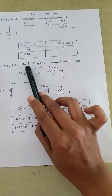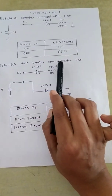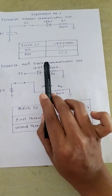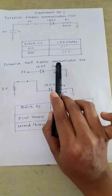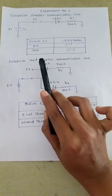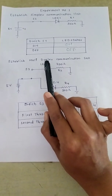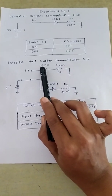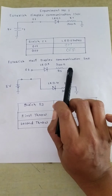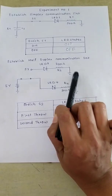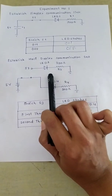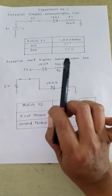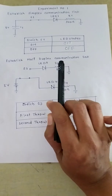Next, what is half duplex communication? Half duplex communication is bidirectional. In this communication we are transmitting the signal as well as receiving the signal, but not simultaneously.